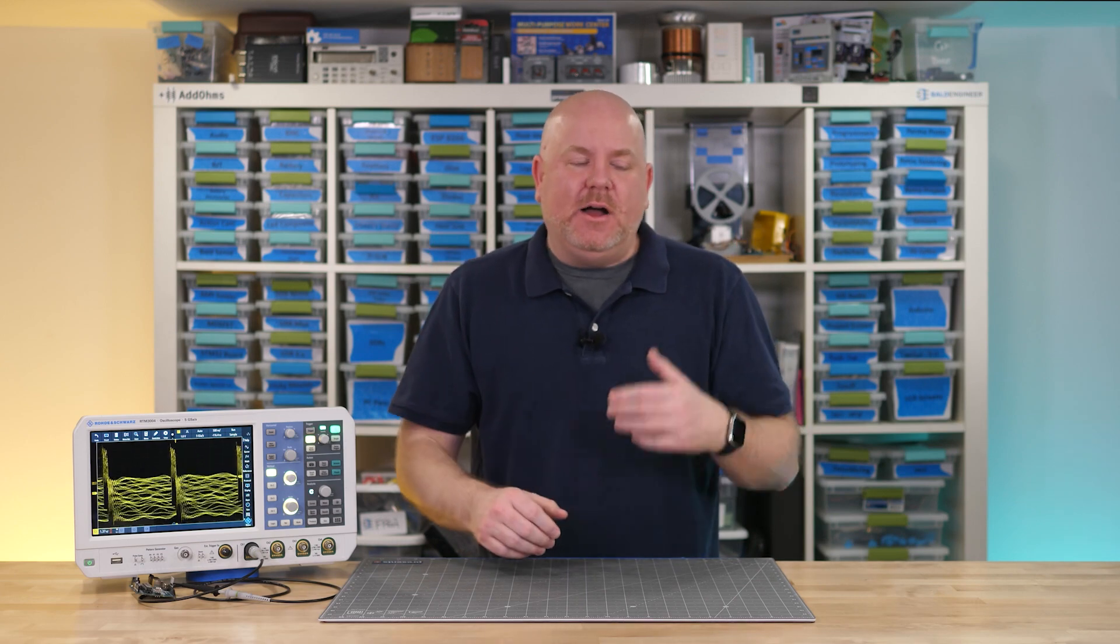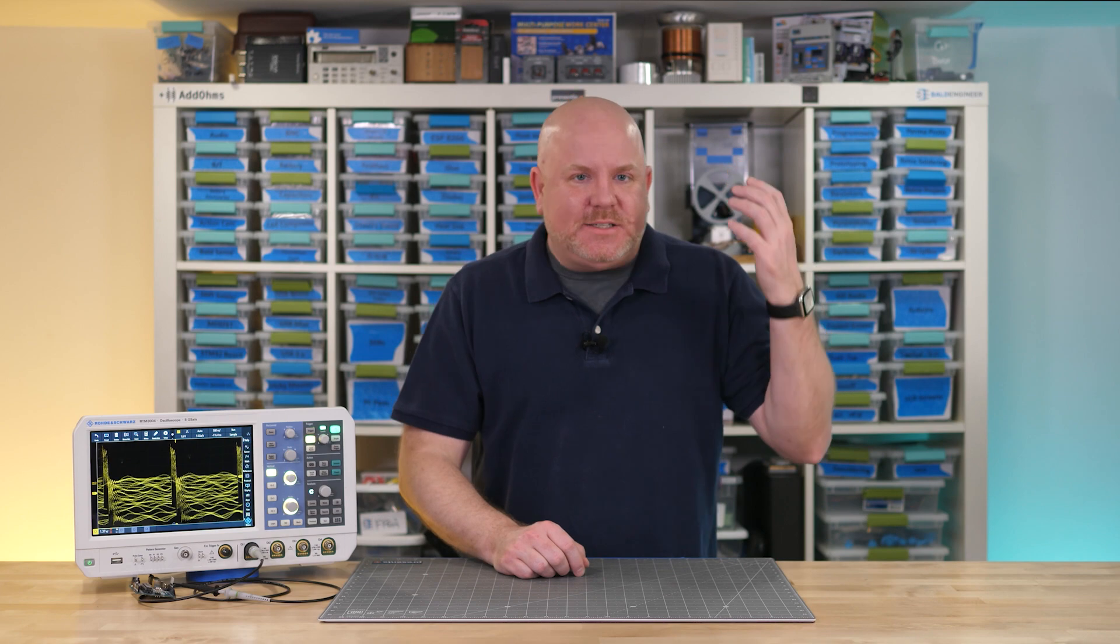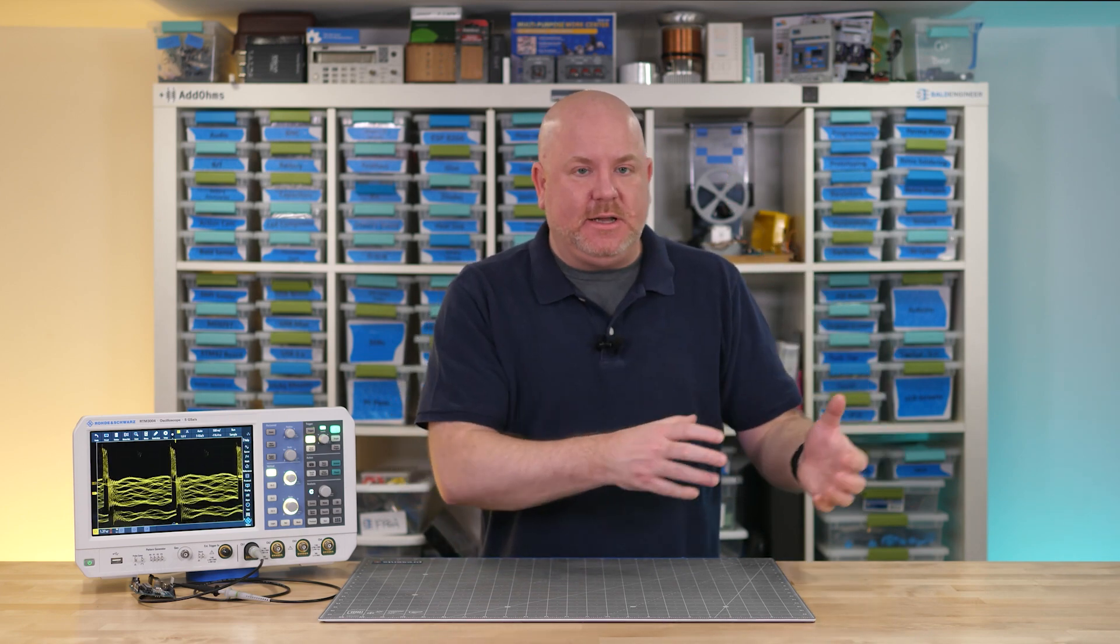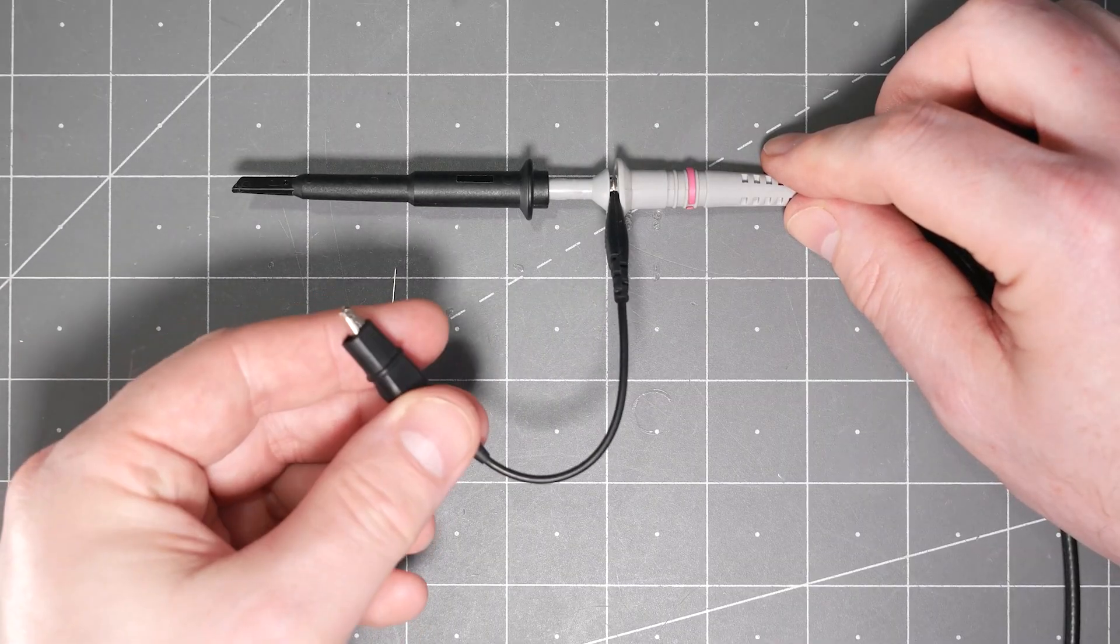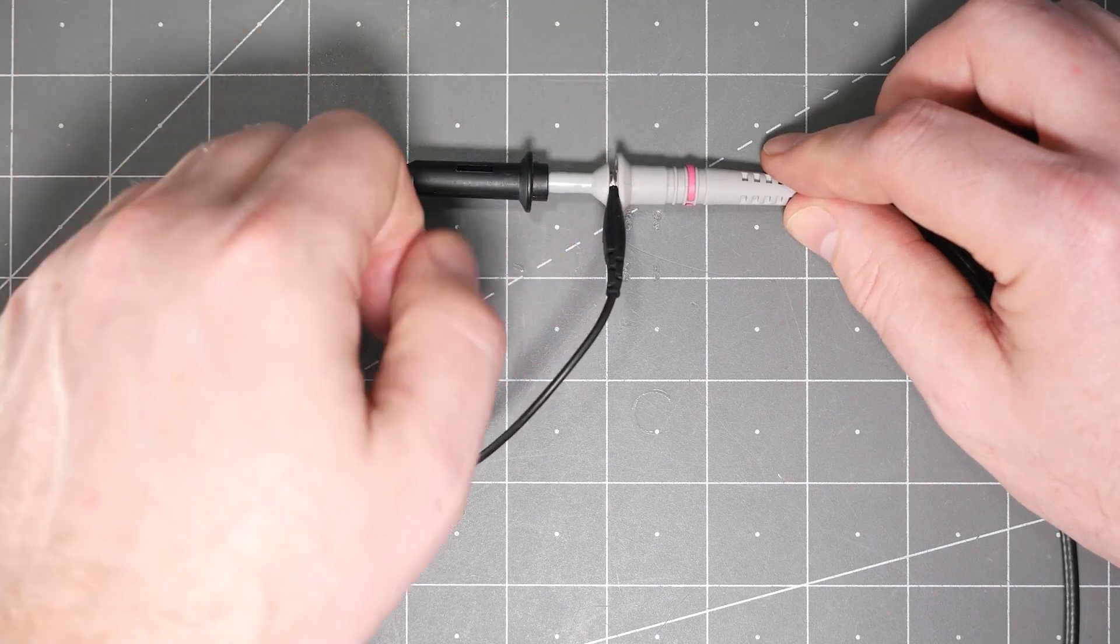Just a quick side note I almost never put the yellow probe on the yellow channel of the scope but I still like having the probe and the tip match so that when I look at the circuit and the scope I can tell which one is which. The ground clip is the accessory that most of us are probably familiar with and then there is the ground spring which I just introduced.